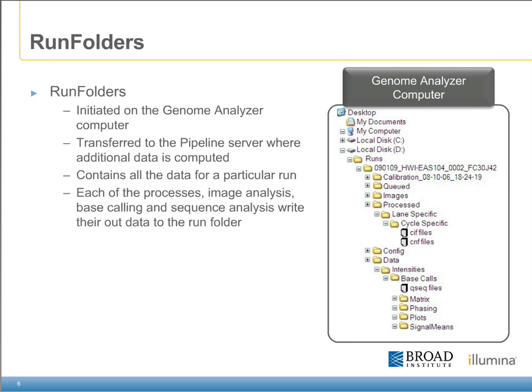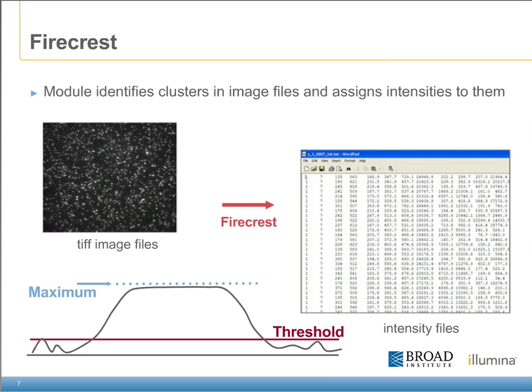The following is an example of a run folder structure produced on the GA. It contains both the lane-specific information as well as the cycle-specific information that is eventually transferred to the network location. One of the initial tasks of the primary analysis is to develop the cluster locations based upon the raw TIFF images developed from the GA. The software translates peaks of intensity against a background into a table to determine the overall intensities for each base at each cluster location throughout the run. This module is called FireCrest and exists both within the RTA as well as the complementary section of the pipeline software package.